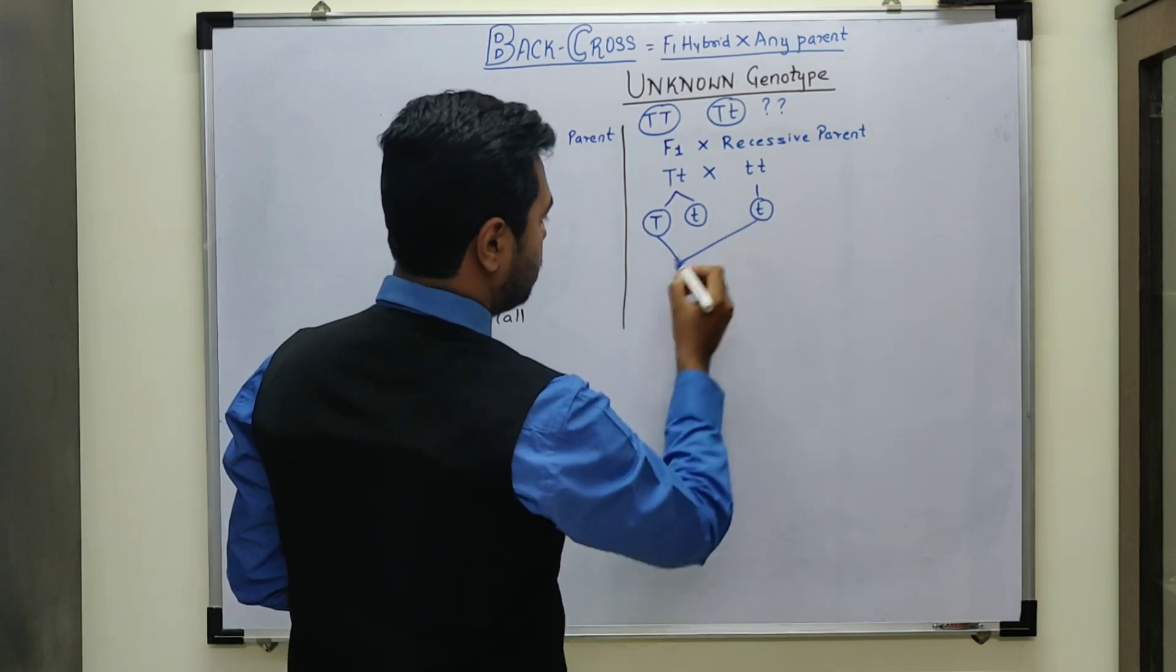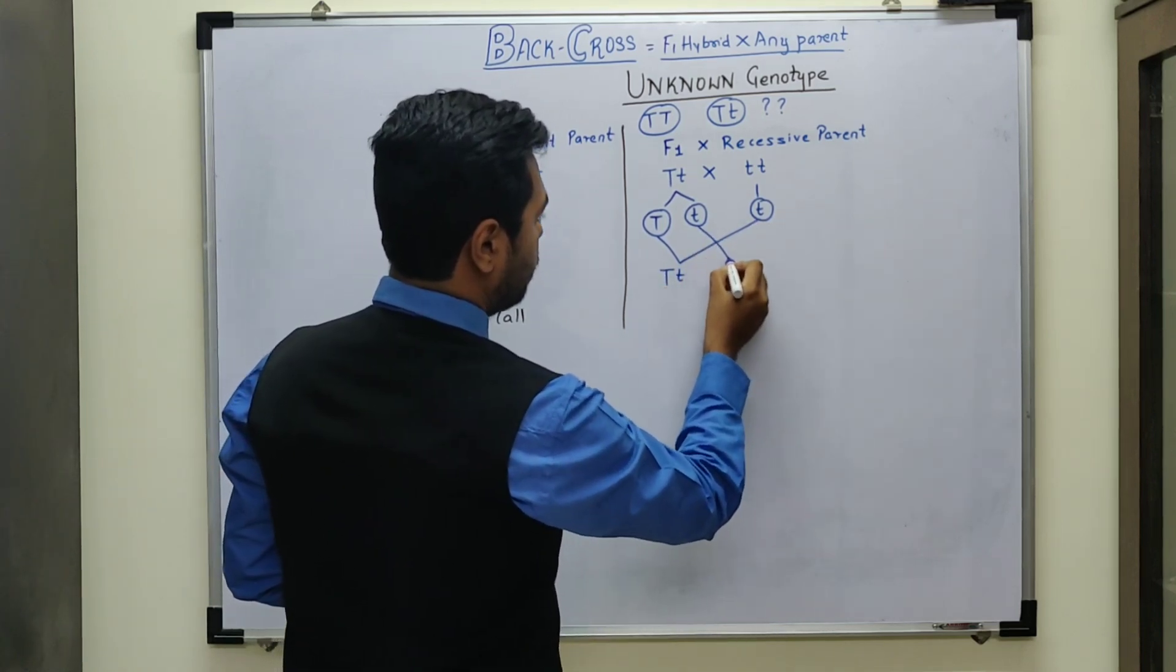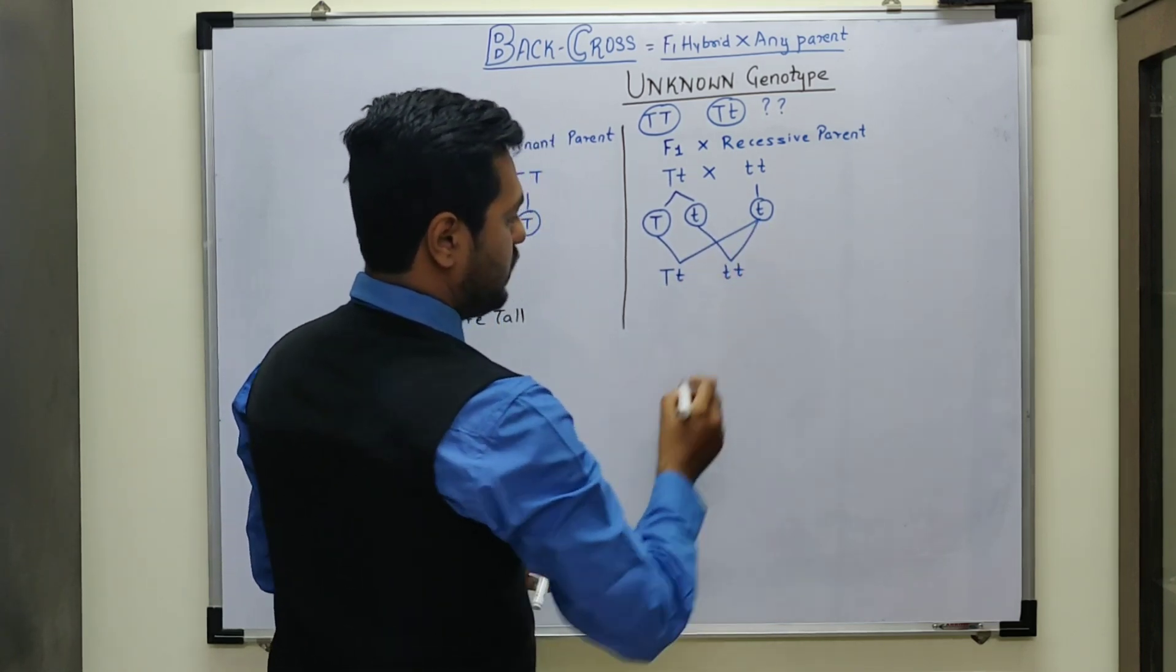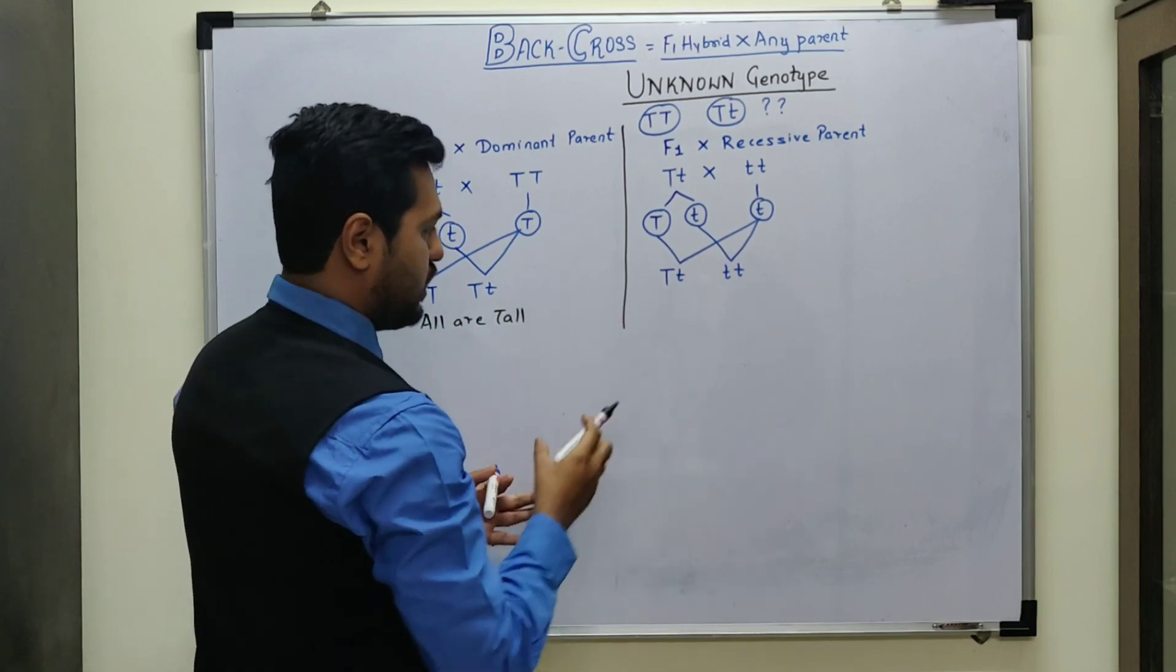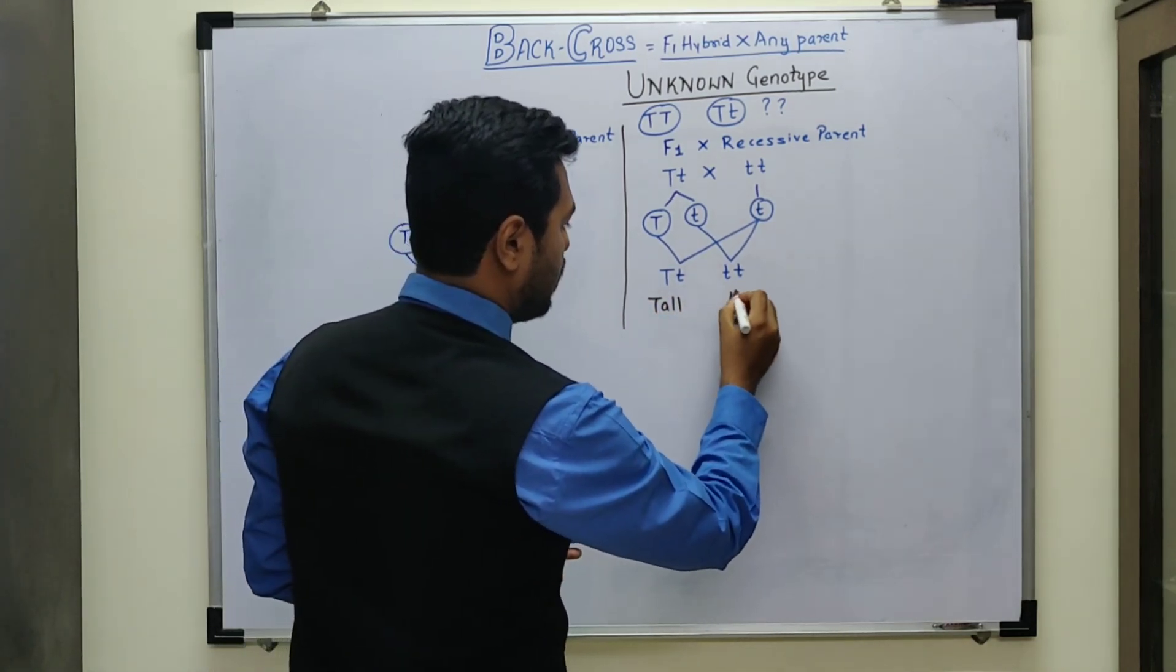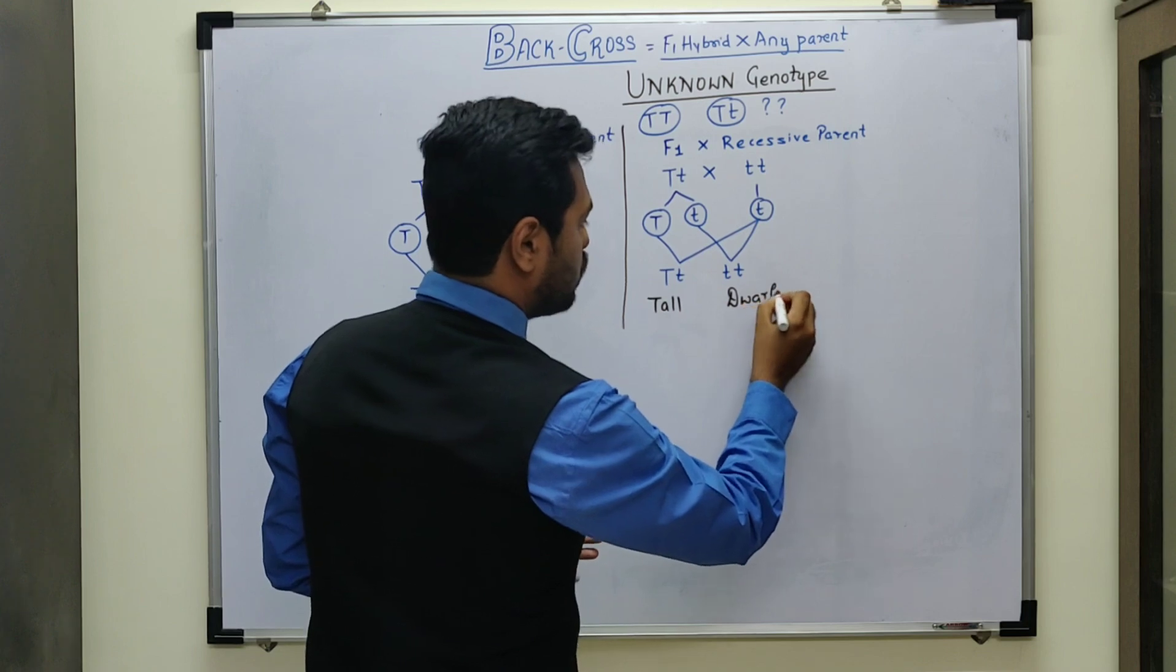On fusing this with this, capital T small t. This with this, small t small t. So this offspring is going to be tall, but this offspring is going to be dwarf.